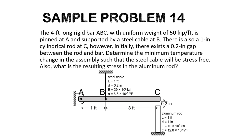Both materials — the steel cable and the aluminum rod — are subjected to a change in temperature and also the force brought about by the weight of member ABC. As you can see in the figure, there is no external load visible, but the load actually comes from the weight of bar ABC. So the steel cable and aluminum rod will experience two different forces.